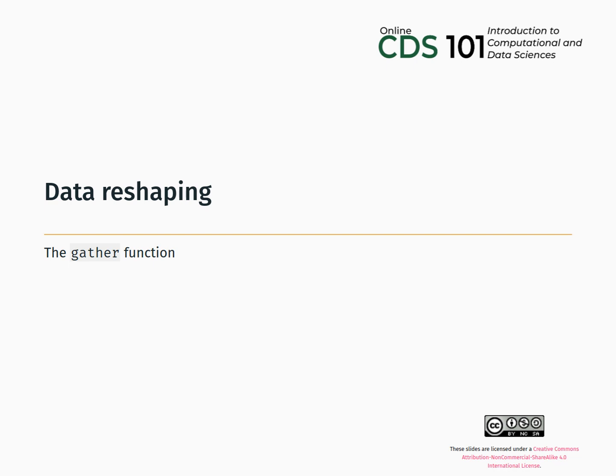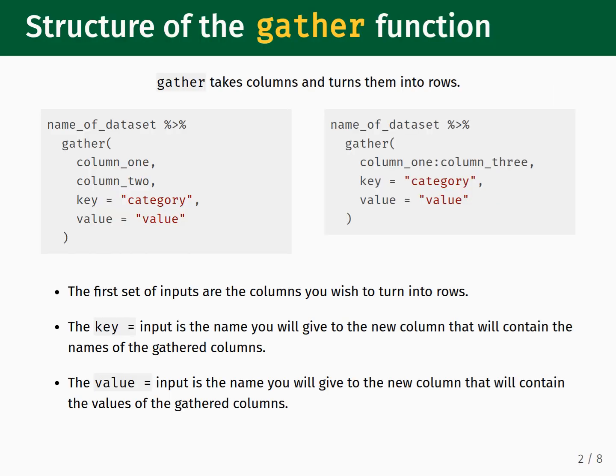Hello, this is Dr. Glasbrenner from George Mason University, and in this video we will learn how to use the gather function from the tidyr package. The purpose of the gather function is to convert columns into rows.